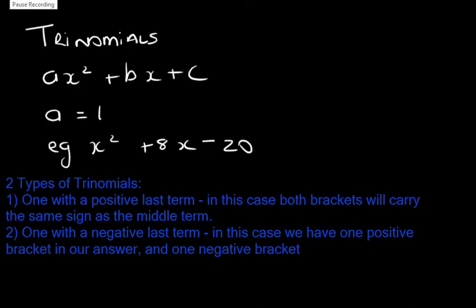Now there are two types of trinomials. One with a positive last term - in this case both brackets will carry the same sign as the middle term. And the second type is one with a negative last term. In this case we will have one positive bracket in our answer and one negative bracket.